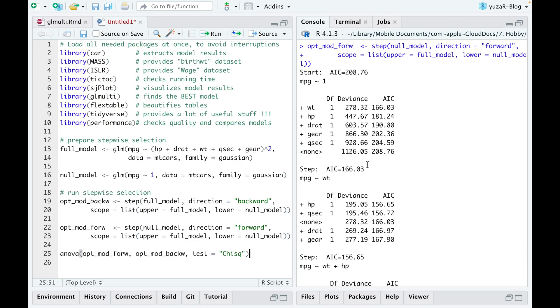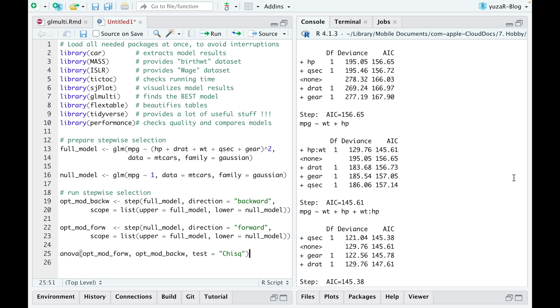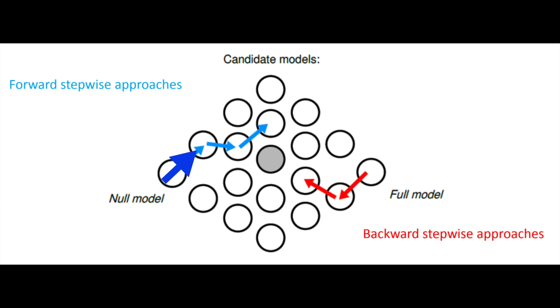These problems occur simply because stepwise selection doesn't look at all possible models at the same time. They just remove or add terms one by one, compare two models, take the best model of the two, remove or add another term, etc.